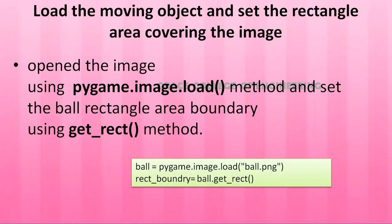Next, load the moving object and set the rectangle area covering the image. Use pygame.image.load() to open the image, and get_rect() to set the ball's rectangle boundary. So: ball = pygame.image.load('ball.png'), and rect_boundary = ball.get_rect(). The image name is ball.png and it must be stored inside the Python directory for it to execute.